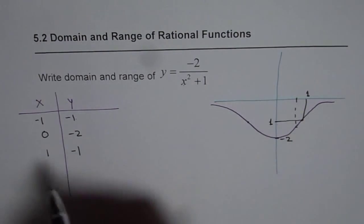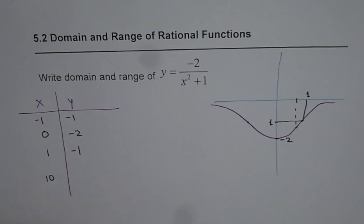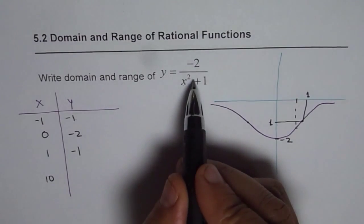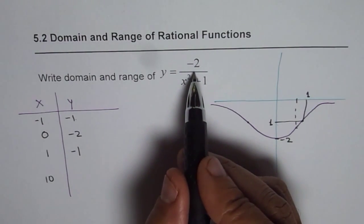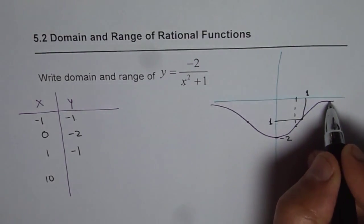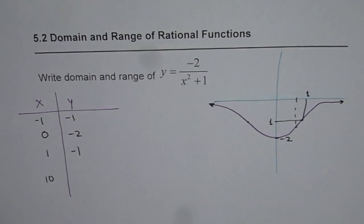Let's take a value which is very large for example. Let's say x is 10. So it will be 100, so minus 2 over 101 will be a very small number but negative. So we can say that's kind of approaching towards 0. So that is how we get our graph.